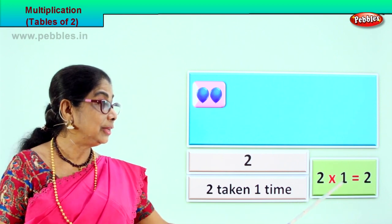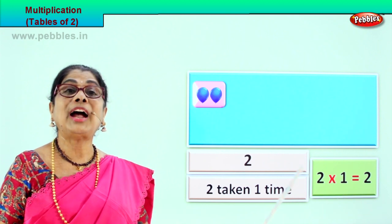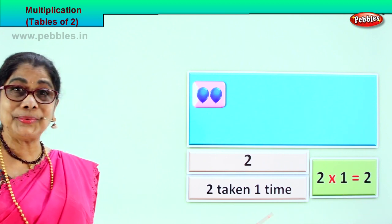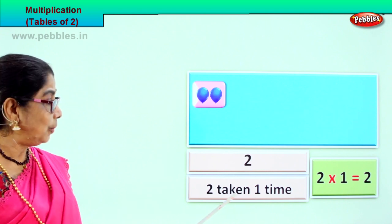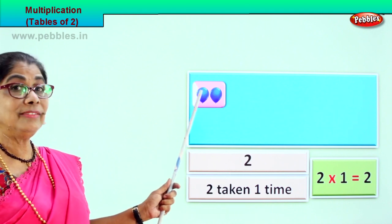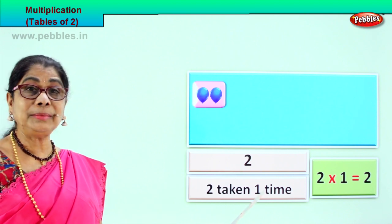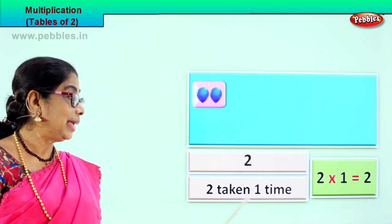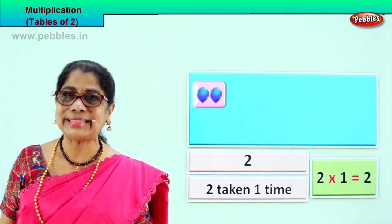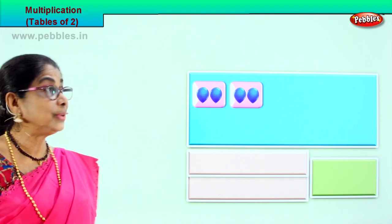Two into one equals two. How will we read this? Two ones are two. You understood now? You have the picture, you have the number, how many times? Two taken one time. Good. So what is two ones are? Two.